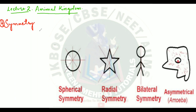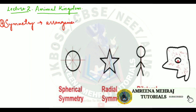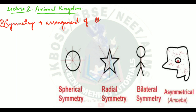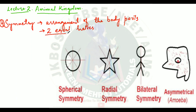What does symmetry mean? Symmetry literally means whether the body of an organism could be divided into two equal halves or not. We look at the arrangement of body parts of an organism - they are arranged differently in different organisms - and we focus on whether the organism could be divided into two equal halves or not.